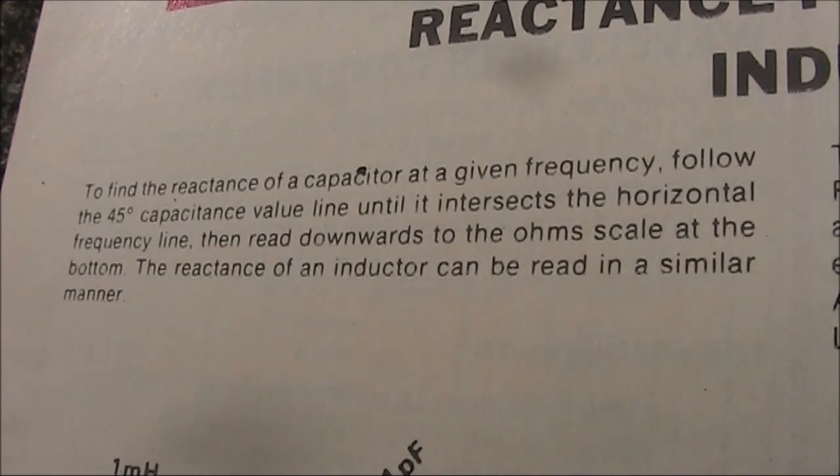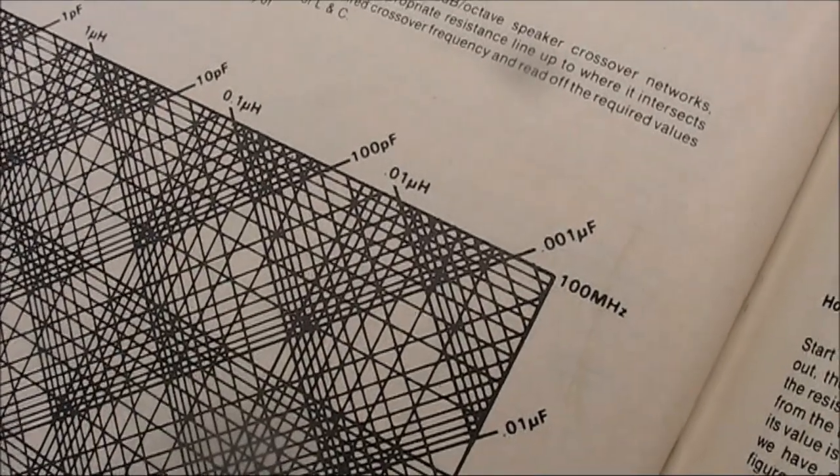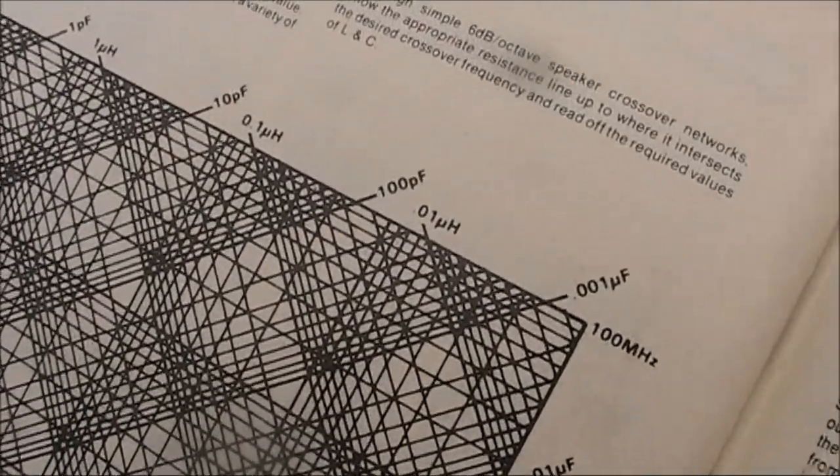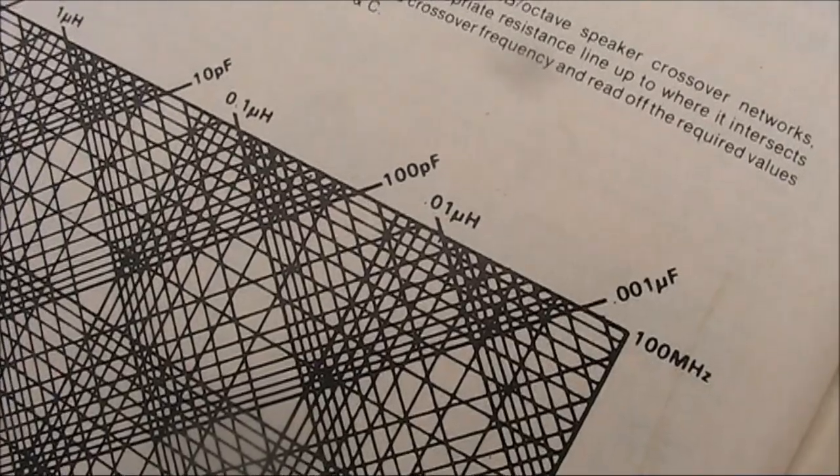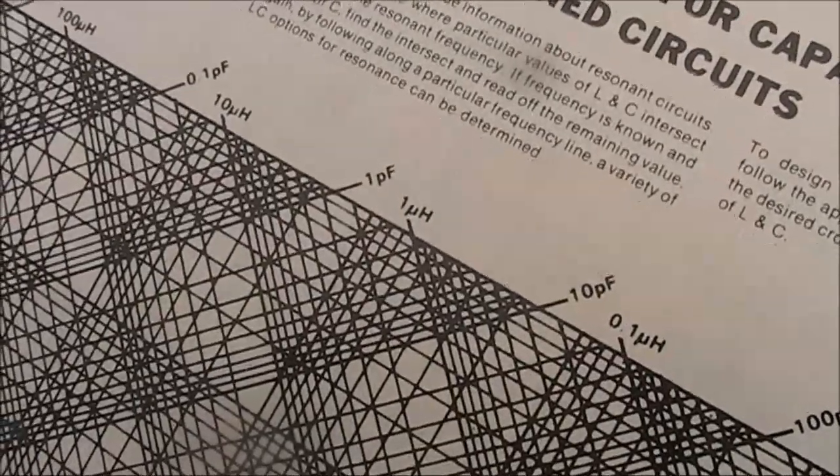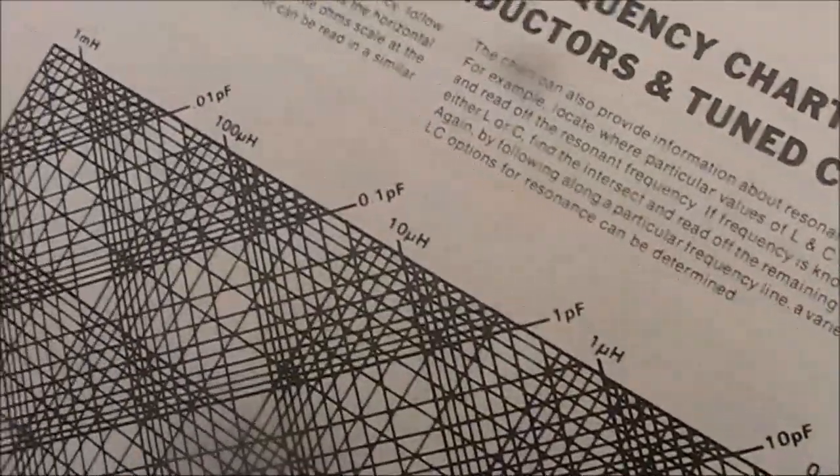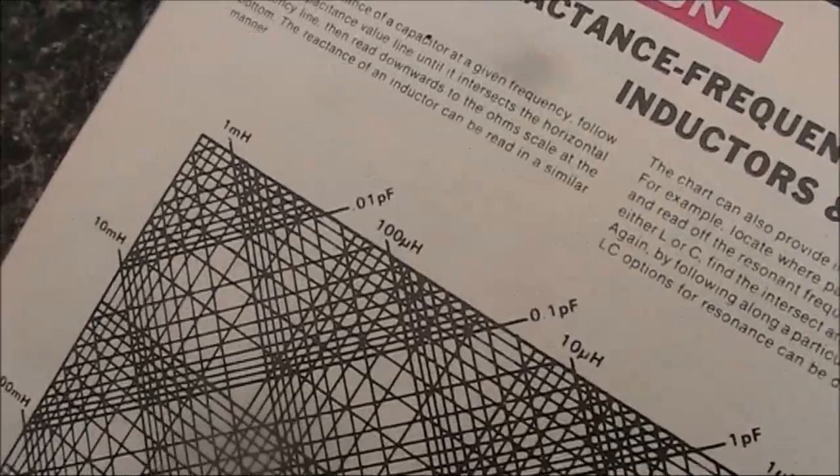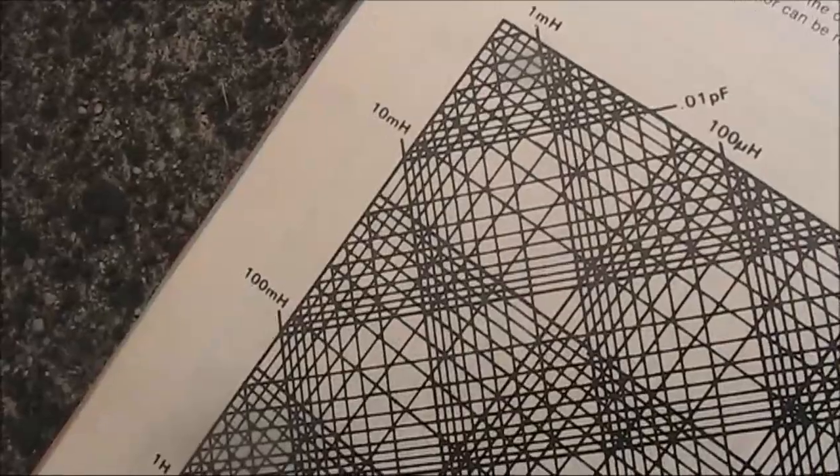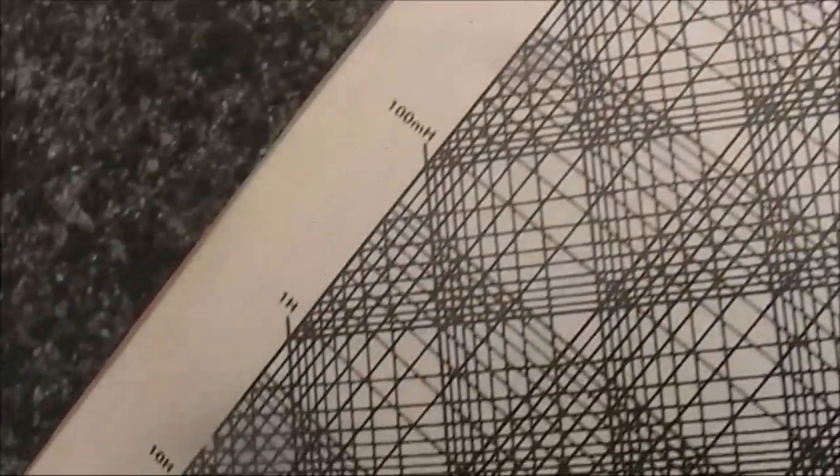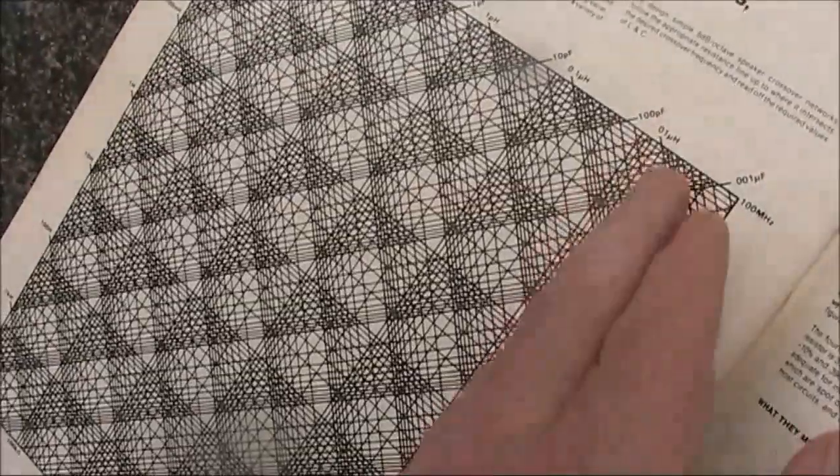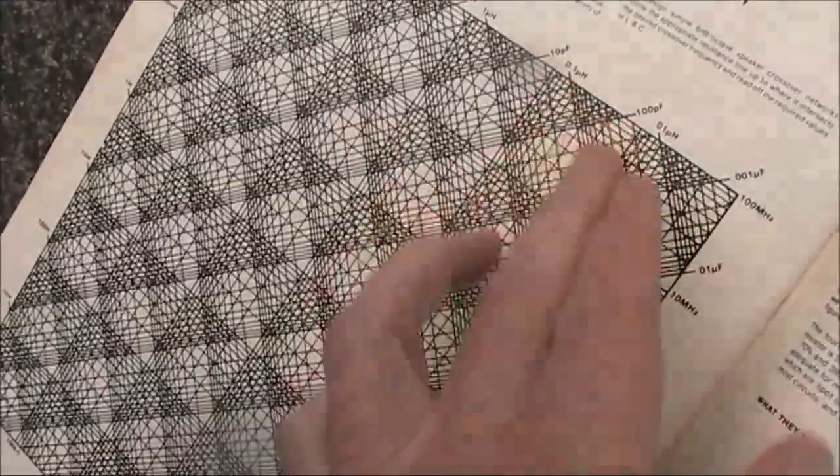Something that might initially be confusing is how things go around the corner. For instance, you've got very small amounts of inductance here: 0.01, 0.1, 1 microhenry here, 10 microhenry, 100 microhenry, 1 millihenry, and you go around the corner and you get even bigger amounts of inductance. At first glance, this doesn't make sense, but then it does when you see the lines that they are associated with.